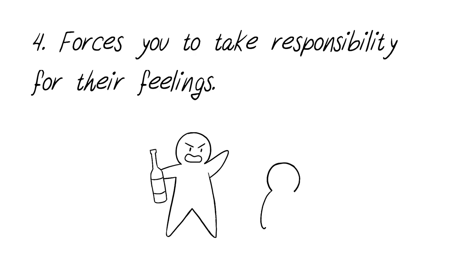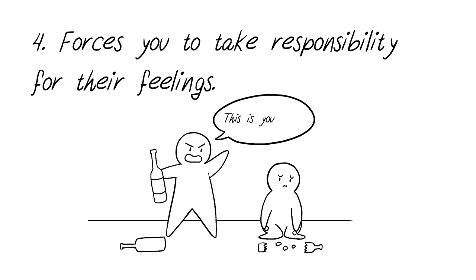4. Forces you to take responsibility for their feelings. The abuser will use this tactic as a form of manipulation. They may say, "You make me angry," or "you've done this, you've done that," as a way to make their victim feel responsible for anything bad. This is meant to push that victim to work on making the abuser happy at all times. The abuser wants to keep their victim in line, and making them feel like it's all their fault helps the abuser control their victim's actions.